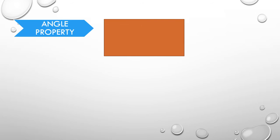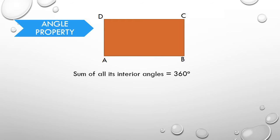Now, let us learn the angle property of a rectangle, for which we are going to consider a rectangle ABCD. Since a rectangle is a quadrilateral, the sum of all the interior angles of a quadrilateral is equal to 360 degrees. The same property is applicable over here also — the sum of all the interior angles of a rectangle is also equal to 360 degrees.